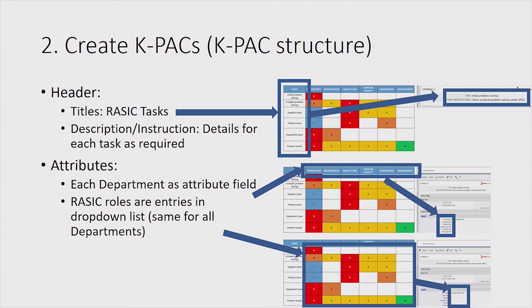Once you've set up the COP, what was in the left column of your Excel becomes your header. The tasks become your title, and the description and instructions are the details for each task. The attributes correspond to each of the columns — the columns become the attributes. This is more of a conceptual overview — don't try to read this eye chart.